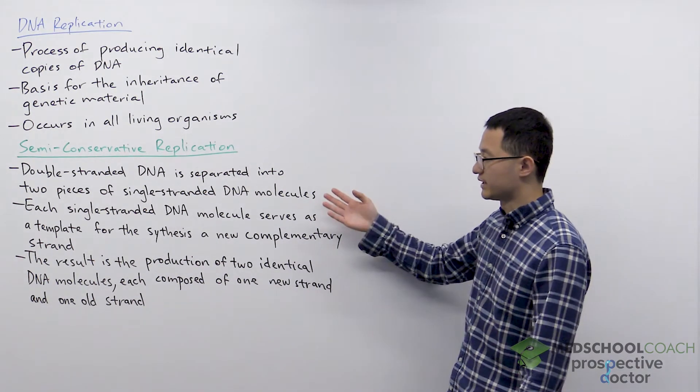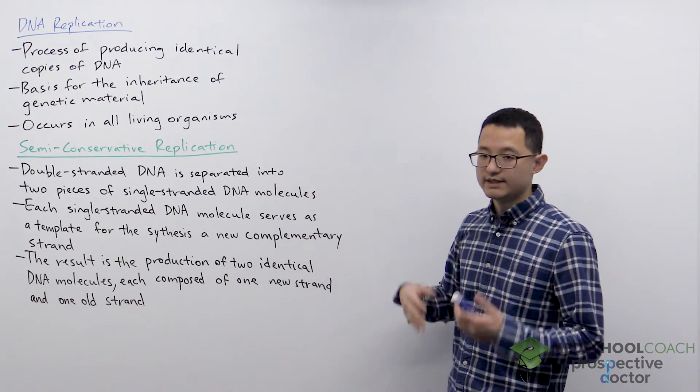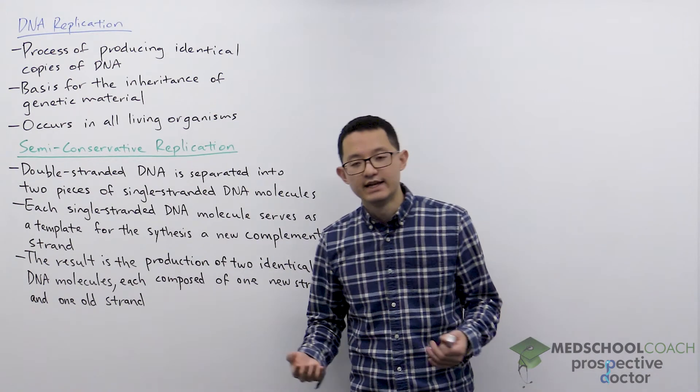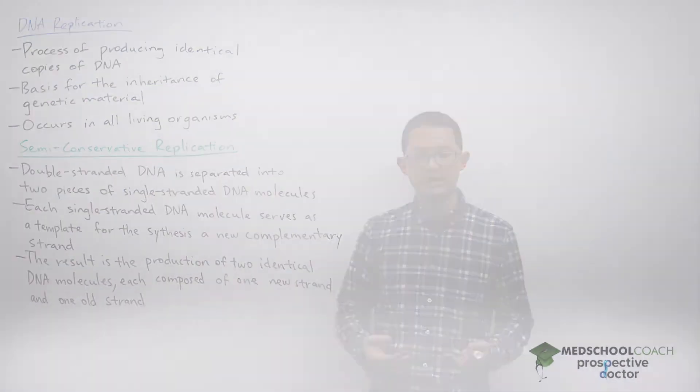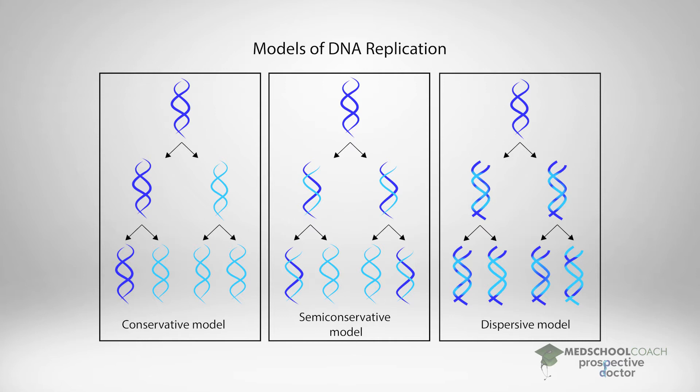Now historically there were several models for how DNA replication occurs and you can see that in this diagram with the conservative model, the semi-conservative model, and the dispersive model.